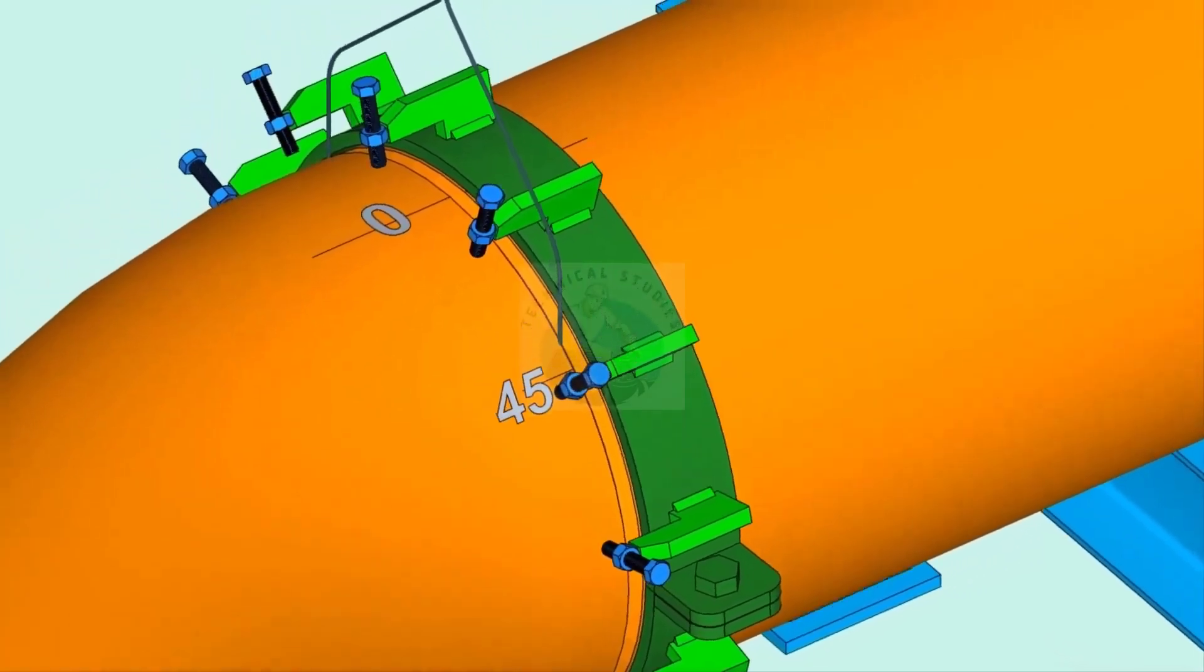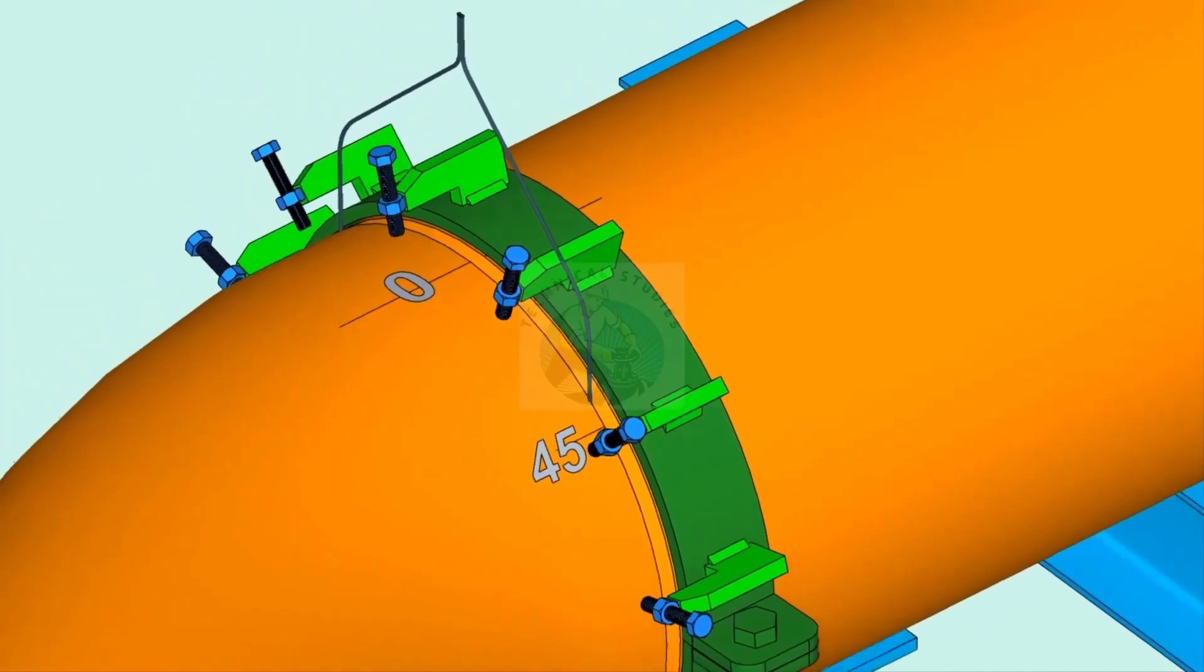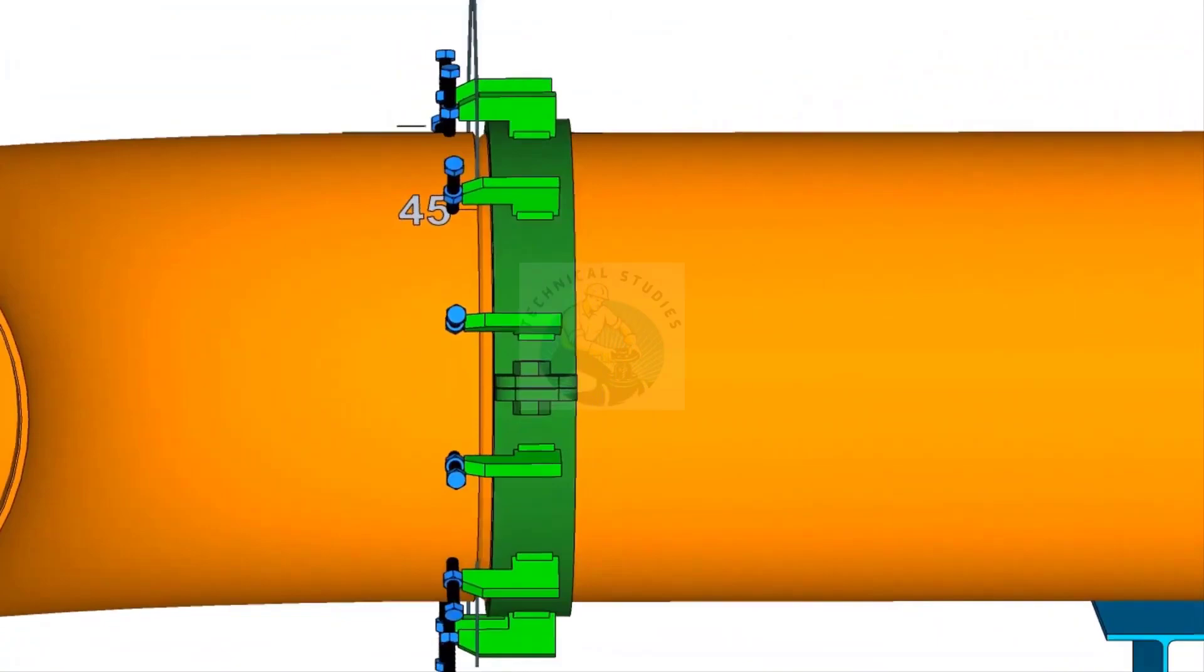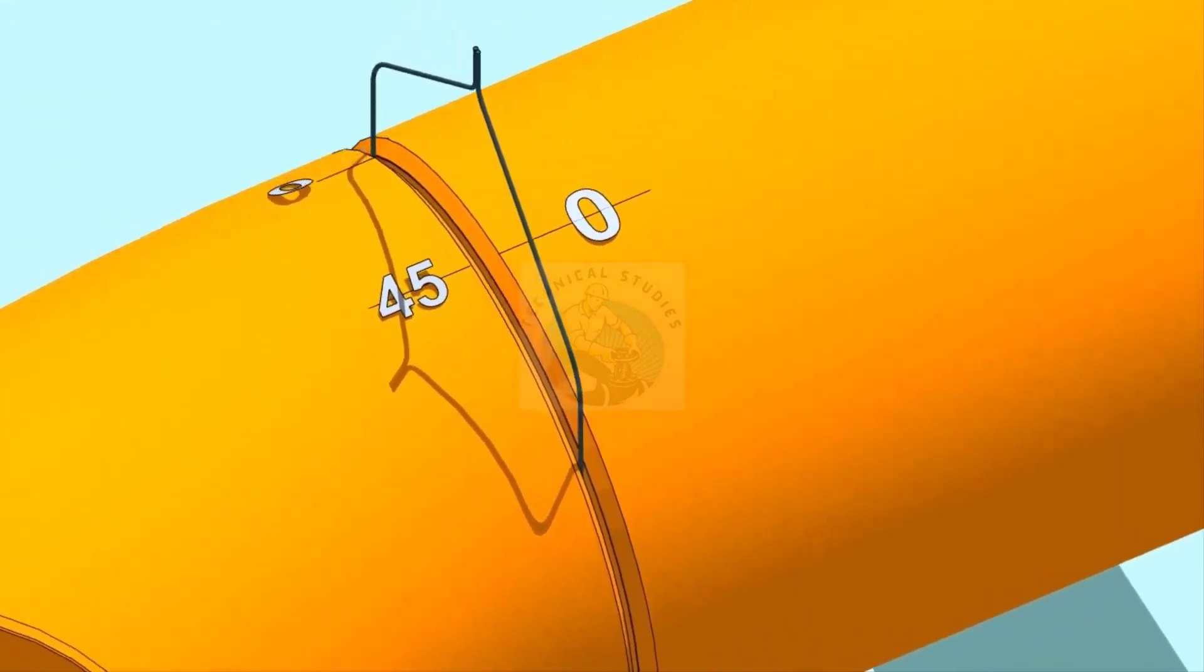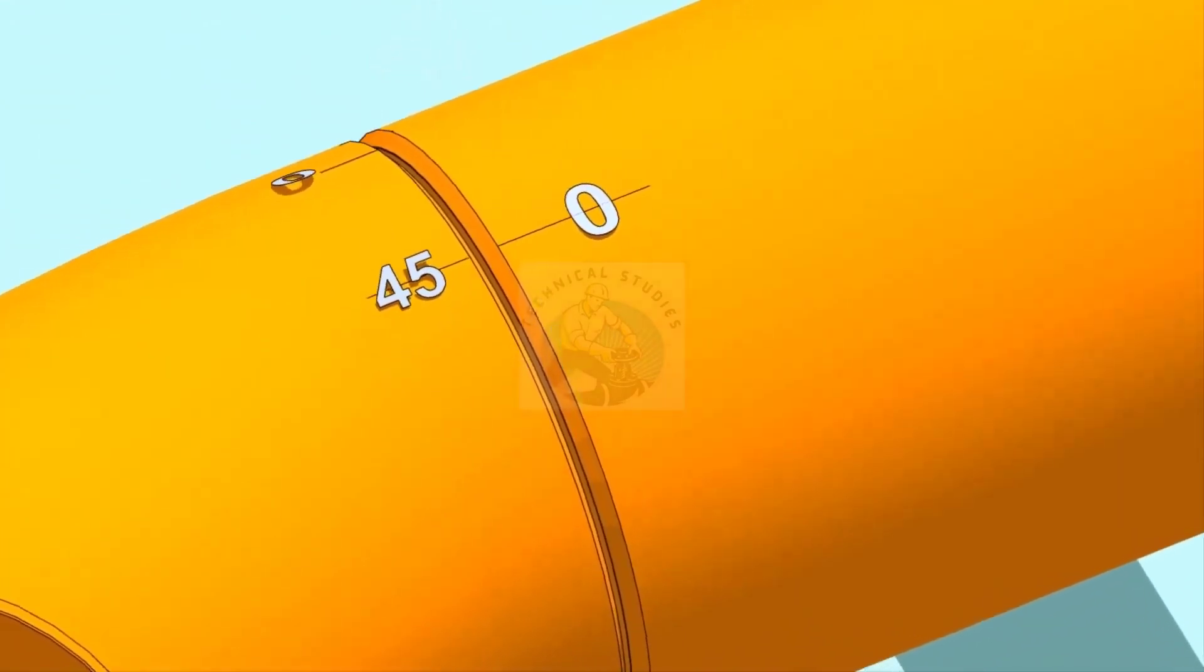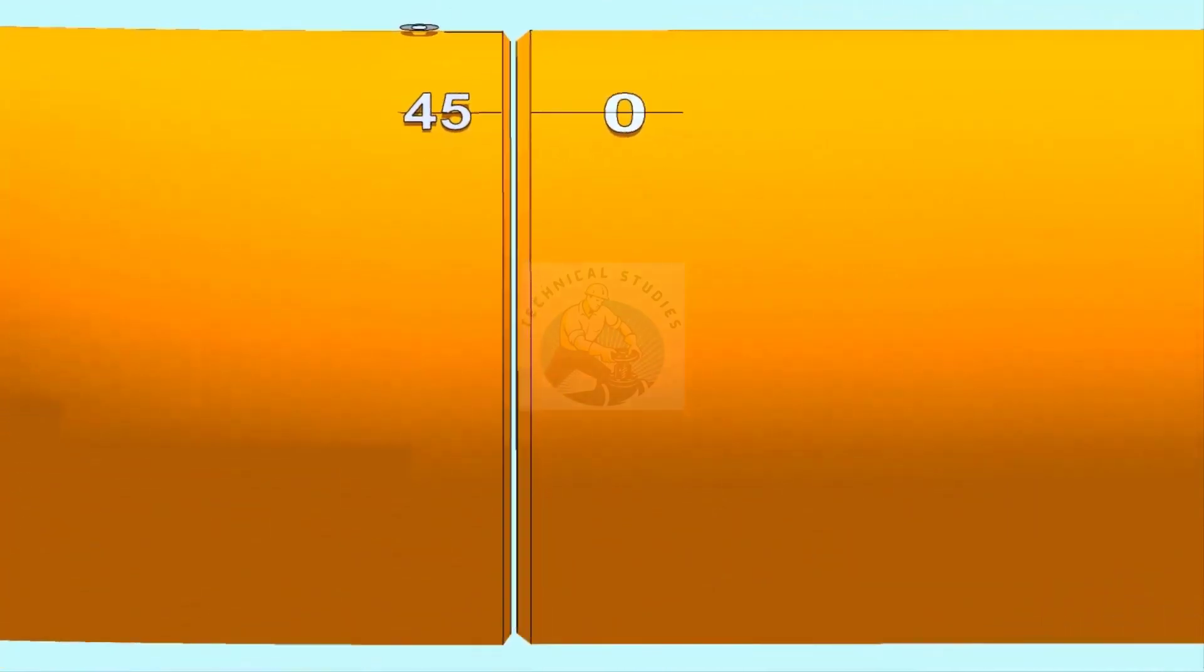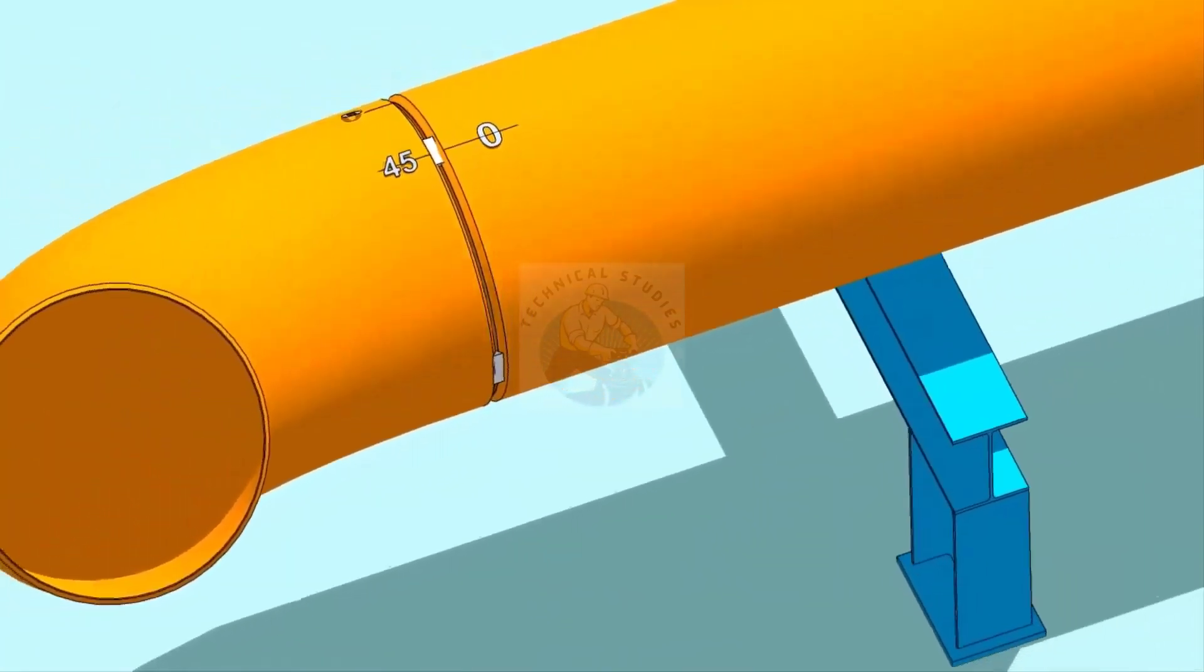Put the gap rod in the joint. Now slowly rotate the elbow until the 45 degree mark comes opposite to the 0 mark on the pipe. Make the joint gap equal all around the joint.